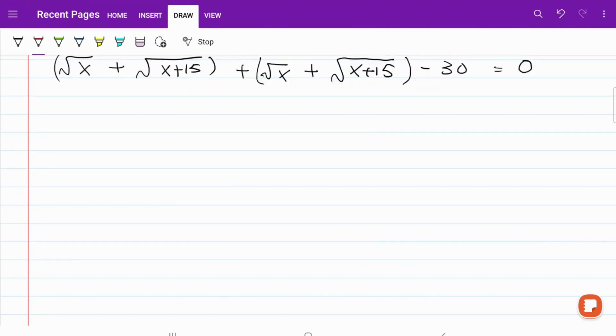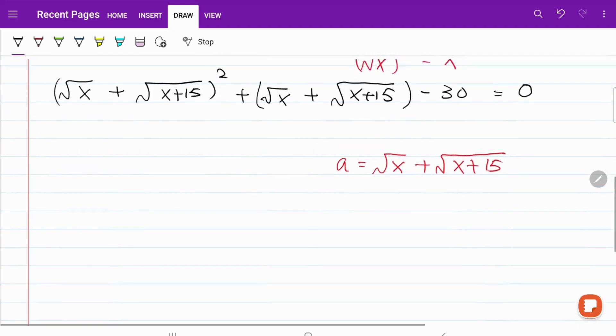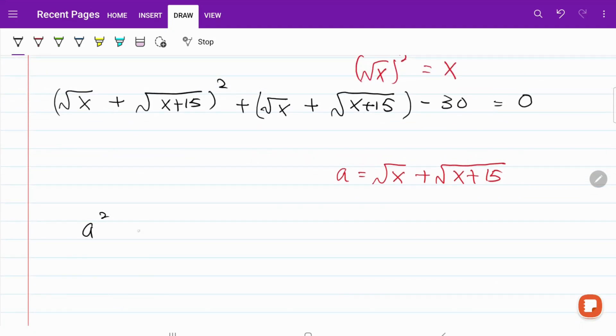To keep things simple, let's go ahead and substitute a as square root of x plus square root of x plus 15. With this new substitution, our equation now looks like a squared plus a minus 30 equals to 0. This looks much simpler compared to what we originally have. So let's go ahead and solve the quadratic equation.